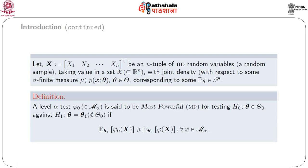A level alpha test phi_0 belonging to M_alpha is said to be most powerful (abbreviated MP) for testing H_0: theta in Theta_0 against the alternative theta = theta_1 not belonging to Theta_0, if E_{theta_1}[phi_0(x)] is greater than or equal to E_{theta_1}[phi(x)] for all phi belonging to M_alpha. Most powerful means it has maximum power against a particular alternative theta = theta_1, among all tests of level alpha.